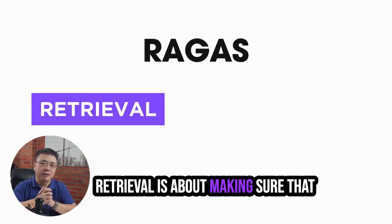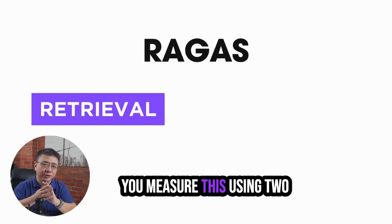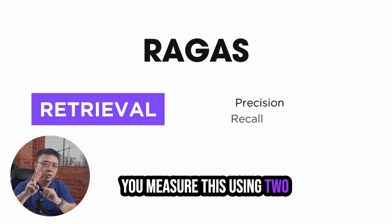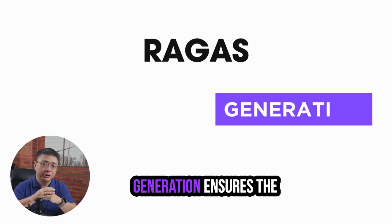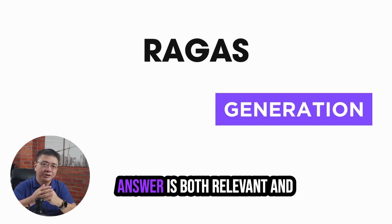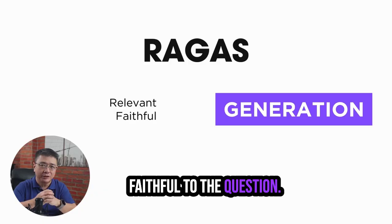Retrieval is about making sure that you're getting the right information. You measure this using two metrics: precision and recall. Generation ensures the answer is both relevant and faithful to the question.